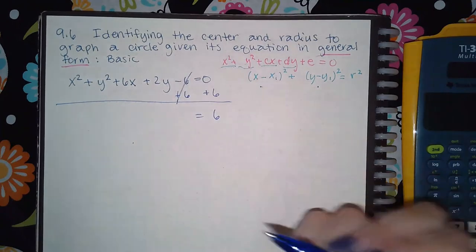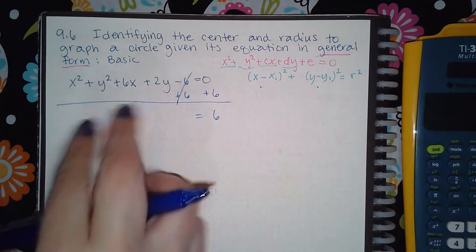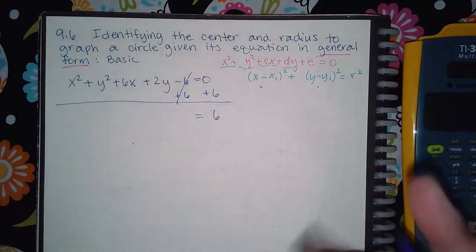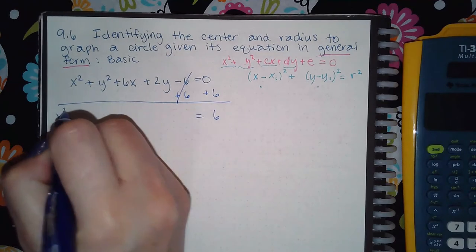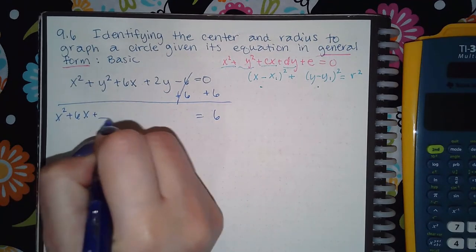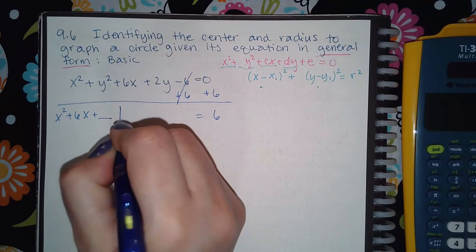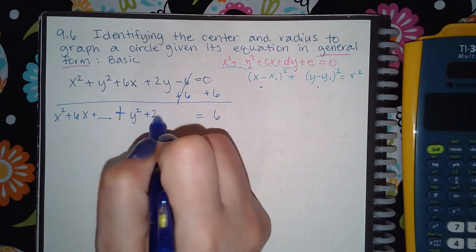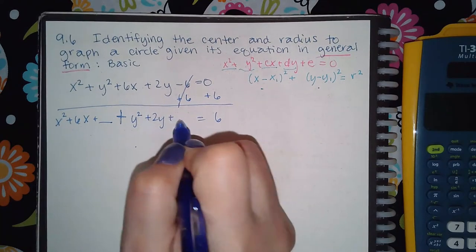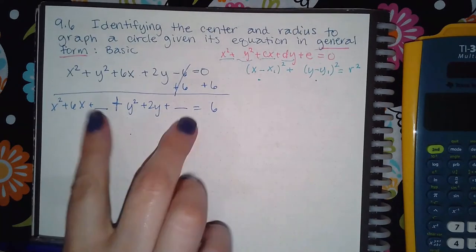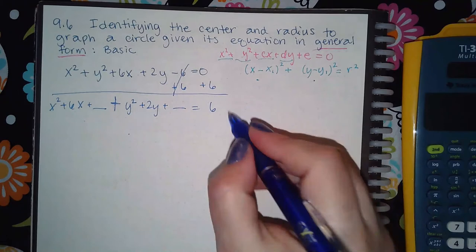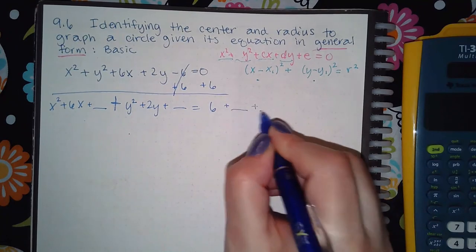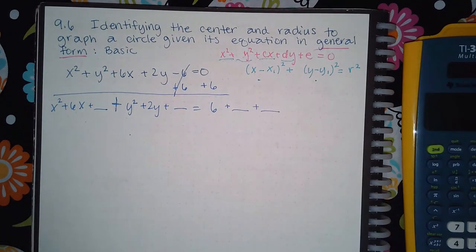The second thing is to rearrange so that you have your x's together and your y's together: x squared plus 6x — leave a blank — plus y squared plus 2y — plus a blank. Whatever we add to the left-hand side, we also have to add to the right-hand side. That's just how you solve equations.